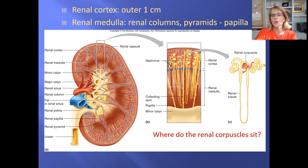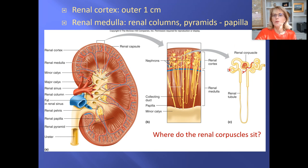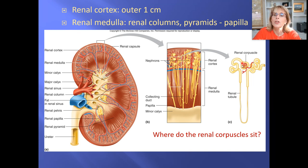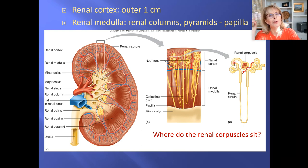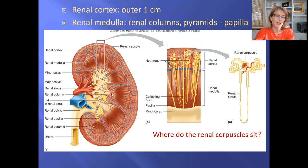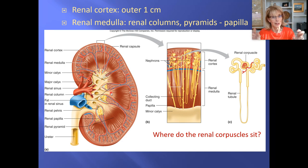The fluid starts right here at the renal corpuscle, and we describe that fluid as filtrate. Technically it starts out as filtrate, and once it goes into the proximal convoluted tubule we call it tubular fluid. It remains tubular fluid until it pops out of the renal papilla — at that point, technically, it's urine.